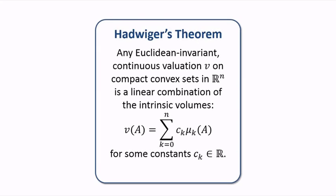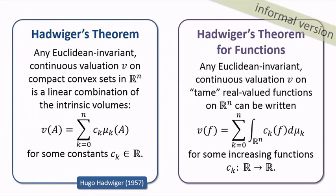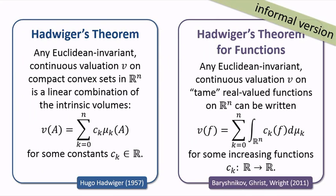We also obtain a Hadwiger theorem for functions. Recall that the classic Hadwiger theorem says that any Euclidean invariant continuous valuation on compact convex sets is a linear combination of the intrinsic volumes. Hadwiger's theorem for functions says that any Euclidean invariant continuous valuation on functions is a linear combination of the Hadwiger integrals.